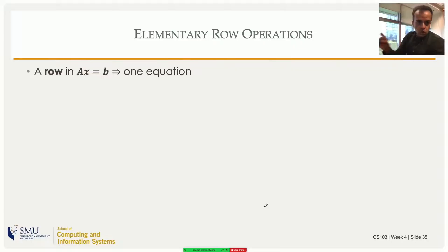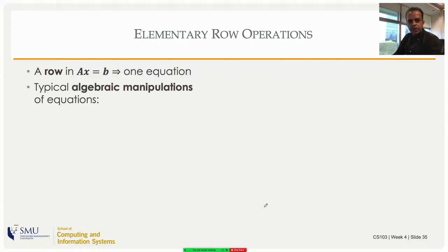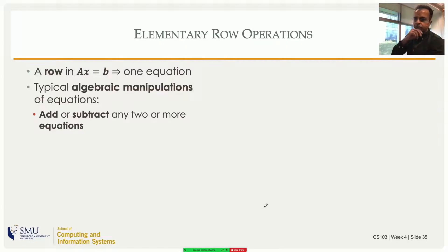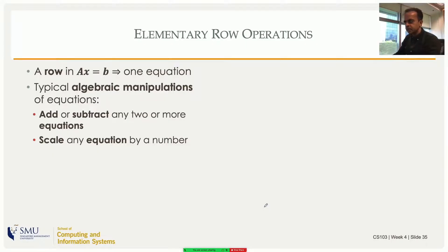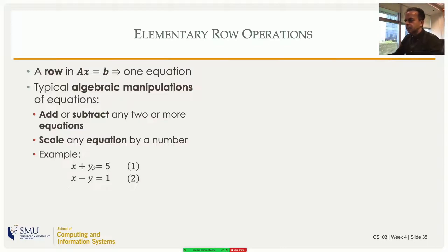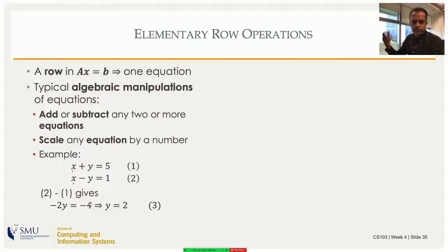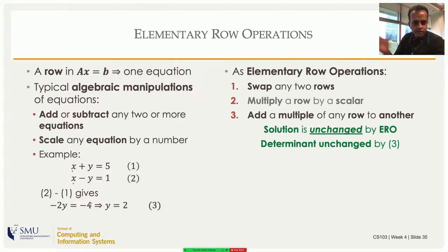Each row in Ax = b is an equation. When trying to solve equations, you can add or subtract any of the equations, or you can scale an equation by any number — multiply both sides by some number and the equation is still valid. For instance, if you have two equations you can subtract the first from the second, getting -2y, and then solve for y.